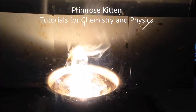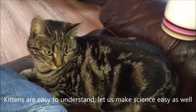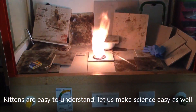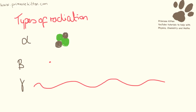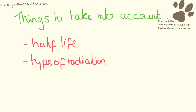In this video we're going to be looking at the uses and dangers of radioactivity. There are three different types of radiation: alpha, beta, and gamma. All of them are very useful, but all of them have very different uses. When we're working out what type of radiation to use for which job, there are a few things we need to take into account — the half-life and the type of radiation.